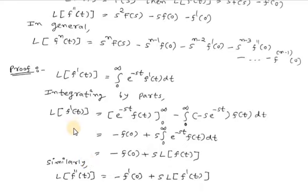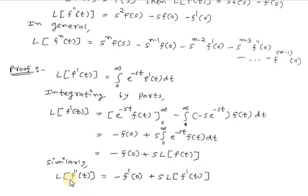In the left-hand side we have the first-order derivative and in the right-hand side we have no derivatives. So similarly, if in the left-hand side we have the second-order derivative, then in the right-hand side we will have first-order derivatives. So we have Laplace of f''(t) equals -f'(0) plus s·Laplace of f'(t).